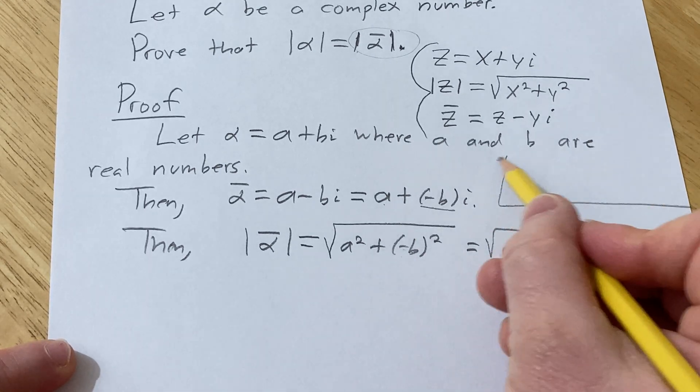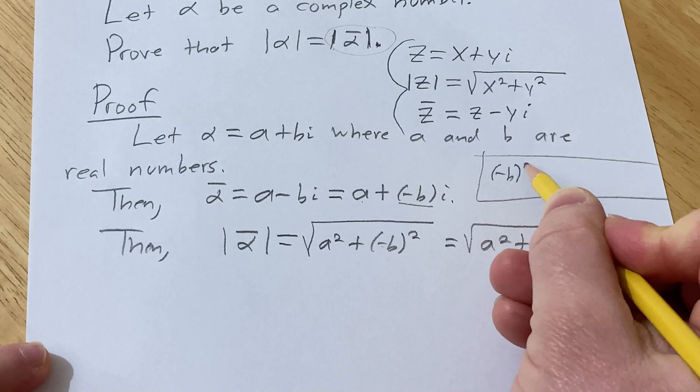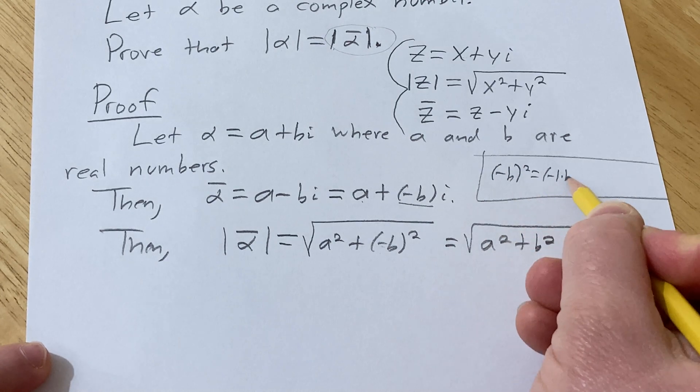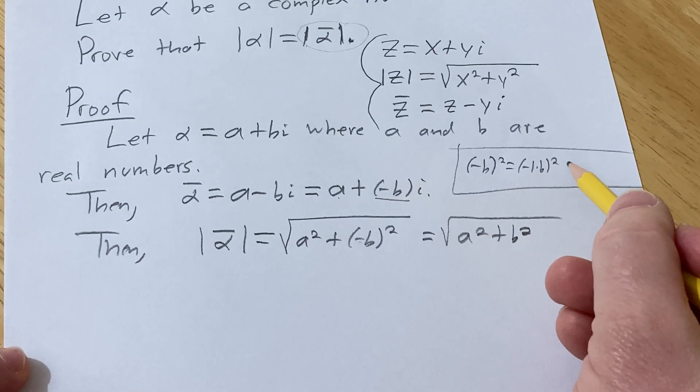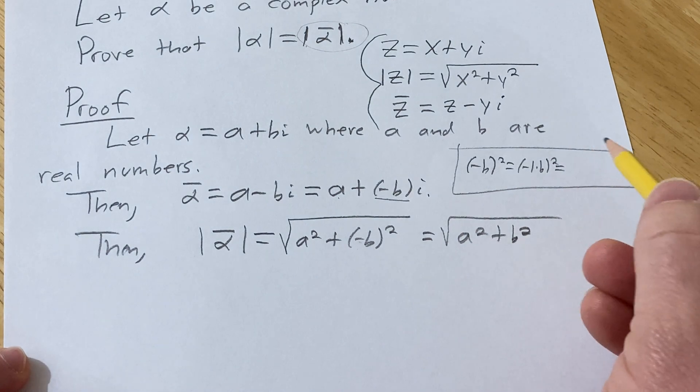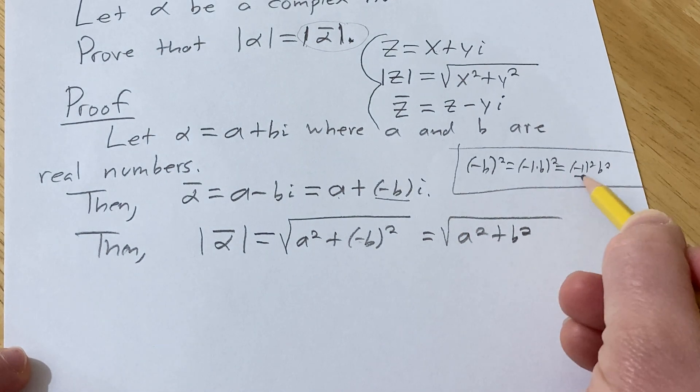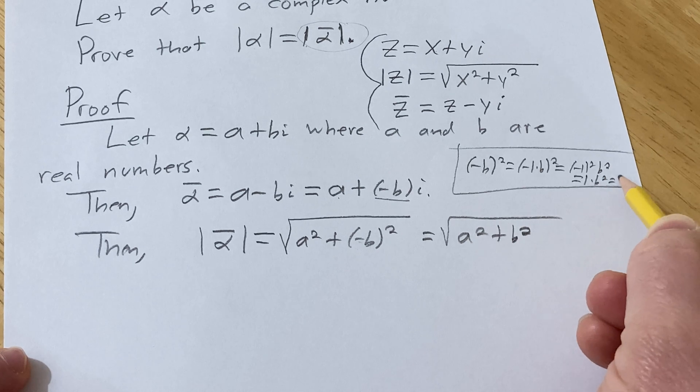here's a sidebar: negative b squared is really negative one times b squared. By properties of exponents, this is negative one squared times b squared, which is one times b squared, which equals b squared.